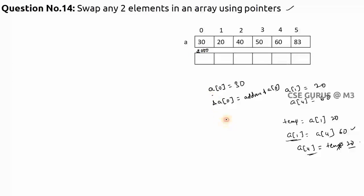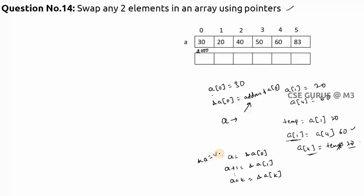If 'a' is an array, then 'a' by itself equals the address of a[0]. Similarly, a+1 equals the address of a[1], and a+k equals the address of a[k]. Since 'a' holds the address of a[0], *a gives the value at that address, which is 30. Therefore, *(a+1) gives the value of a[1], which is 20.